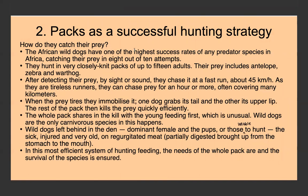African wild dogs have one of the highest success rates of any predator species in Africa — about an 80% success rate. They hunt in closely-knit packs of up to 15 individuals, catching prey such as antelope, zebra, and warthog. When they detect prey by sight or sound, they chase it at about 45 kilometers per hour, and can sustain this for an hour or more, covering many kilometers. When the prey tires, they immobilize it — one dog grabs its tail, another its upper lip — and the rest of the pack kills the prey quickly and efficiently.